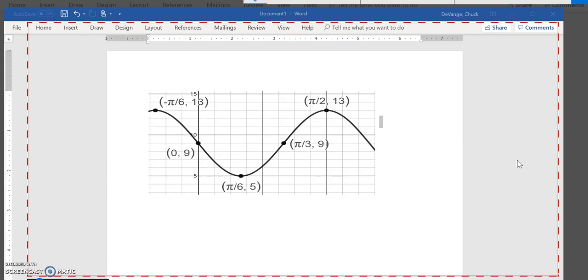All right, this is the third graph from the T4 assessment practice. Let's write an equation for this. So I notice it's starting at a peak and going down. That implies cosine to me.